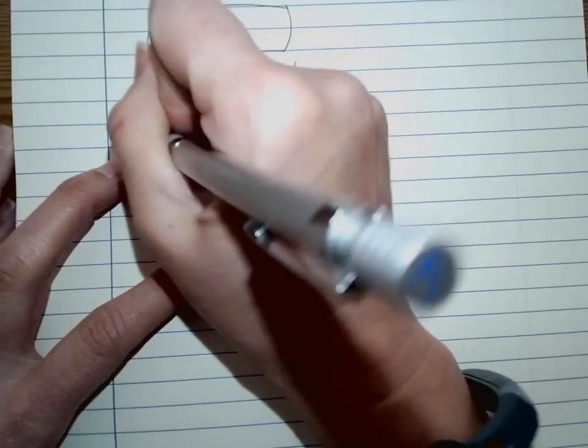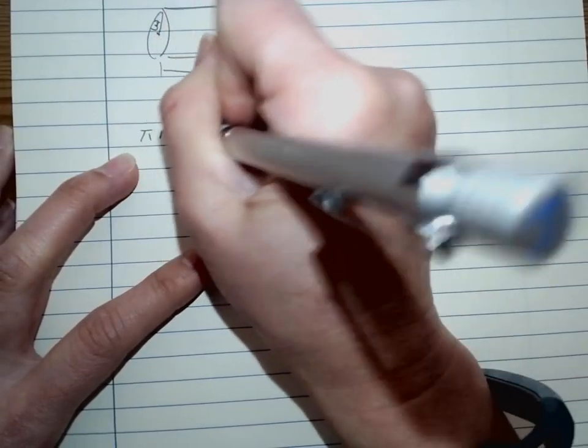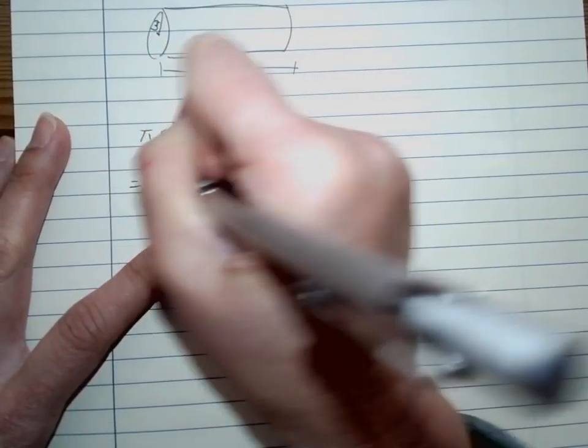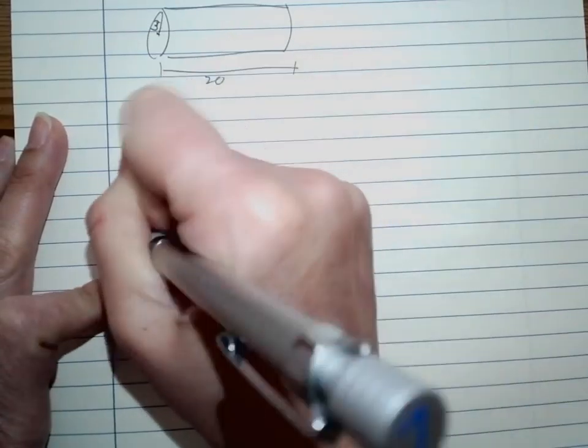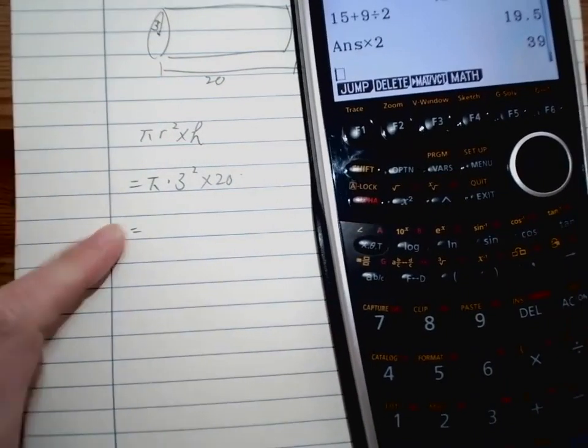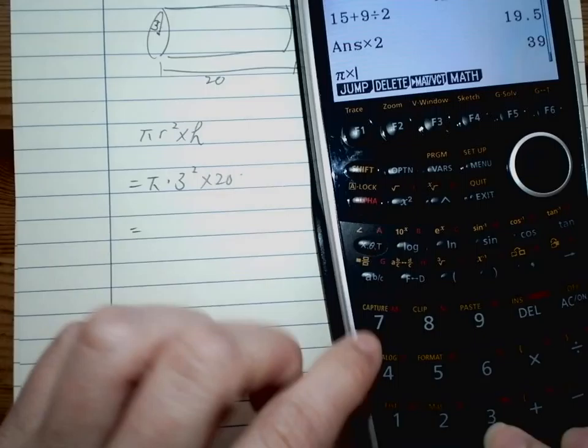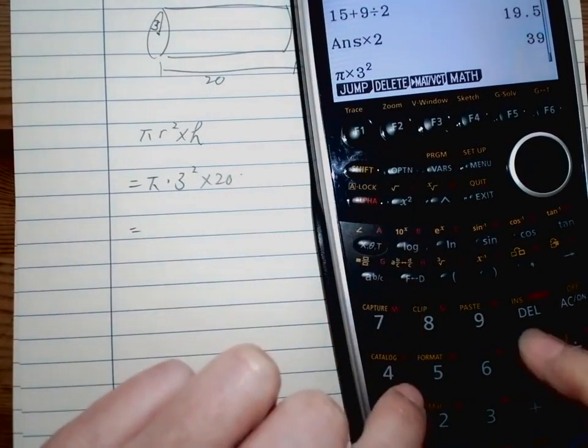Alright, still the basic thing, pi r square times the height. So we have pi times three square times 20. So with our calculator, pi times three square times 20, and I got it's about, my answer is about 565 unit cube.